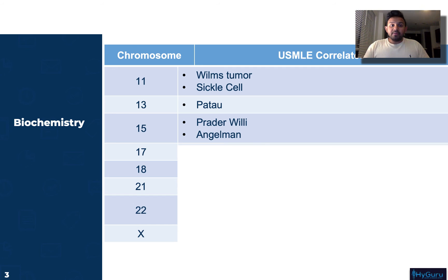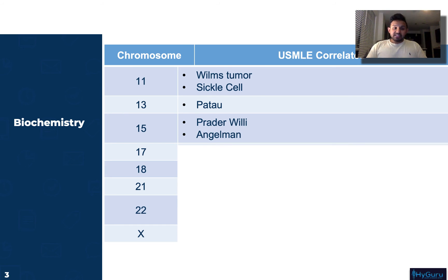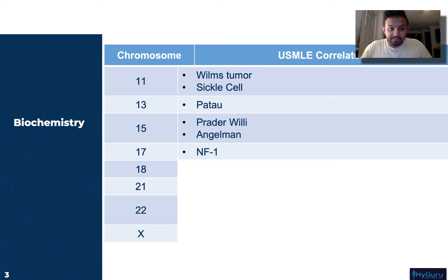Chromosome 15 is going to be related to Prader-Willi as well as Angelman syndrome. For Prader-Willi, the buzzwords are hyperphagia and obesity — they have a tendency to eat a lot. For Angelman syndrome, they're the 'happy puppet' — very friendly — and that's easy to recognize on exam questions.